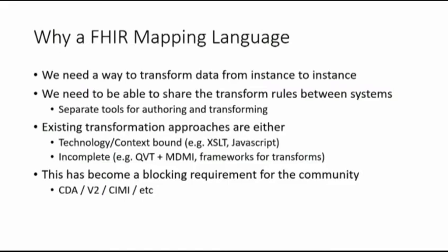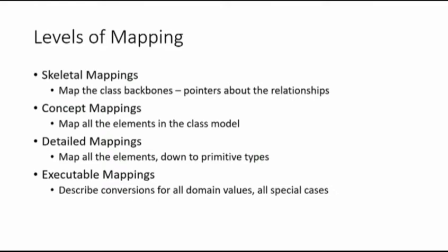Before I get going on the language, here's a really important concept about levels of mapping. If I've got two content models — described as some kind of class model, perhaps a UML diagram or something loosely based on MOF — we have a set of classes with properties and a nested graph of data. We want to migrate from one form to the other. You can write skeletal mappings: just enough information to tell an implementer the big picture. This class maps to this class, and you ignore the stuff that's fine to leave to an implementer. I call that skeletal mapping — you just map the bone structure.